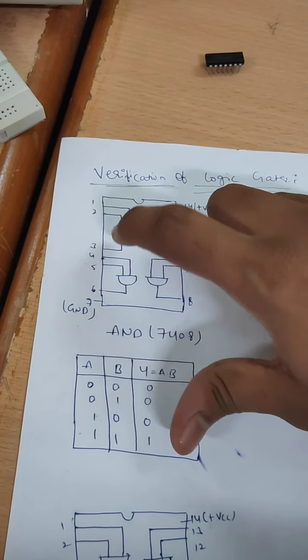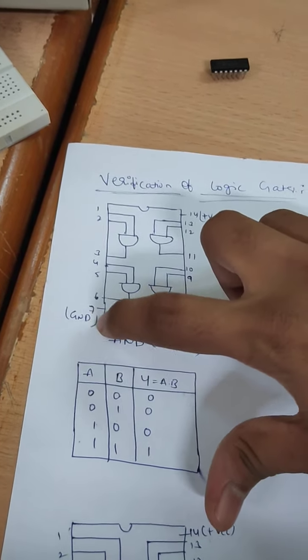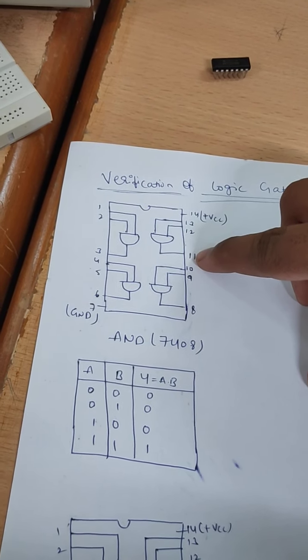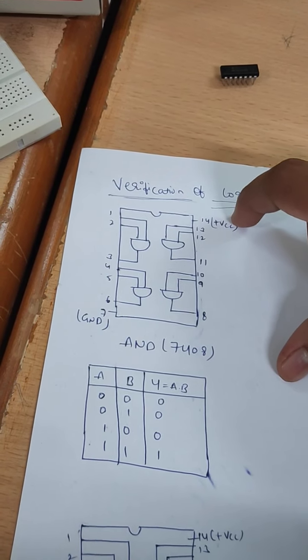Here, pin number 1, 2 are inputs, third one is output, 4, 5 are inputs, 6th is output, 7th is ground, 8th is output, 9, 10 are inputs, 11th is output, 12, 13 are inputs and 14th pin is VCC.